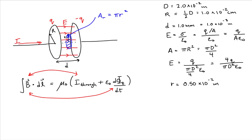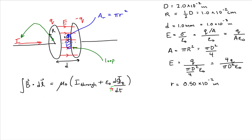If we look at our Amperian loop and label it — this is the loop we are looking at — we have to find the current through it. Because this is a capacitor and in between the plates is a vacuum, the current stops at the plate. The current exists here but no longer past the plate. Why? Because current is the rate at which charge flows, and there is no charge flowing from the positive plate to the negative plate. That means there is no current through the Amperian loop, so that expression goes to zero.